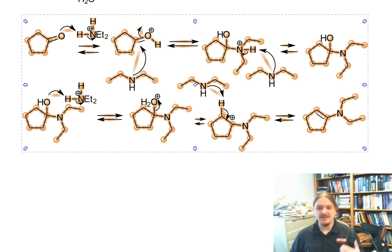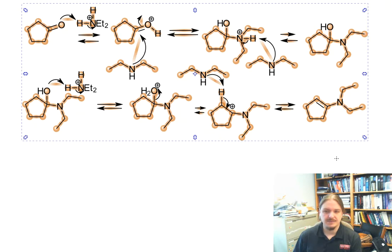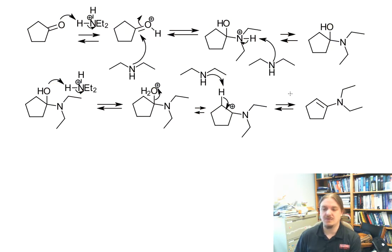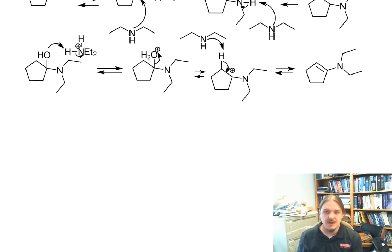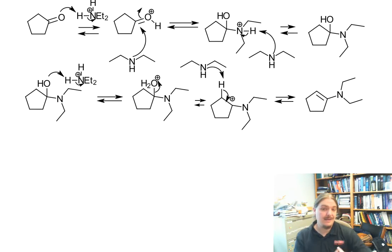As with imine hydrolysis, enamine hydrolysis follows the same pathway, but backwards. I'm not going to necessarily draw out all of the steps, but you go through these intermediates backwards, and instead of having diethylamine, you have water as the base and the nucleophile.